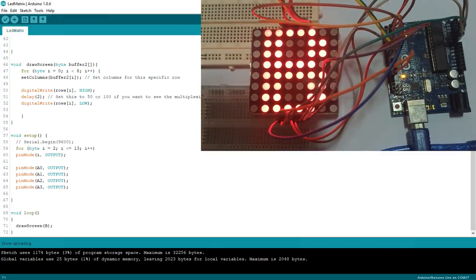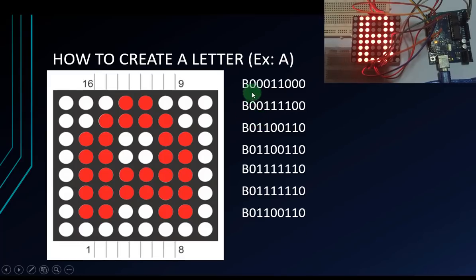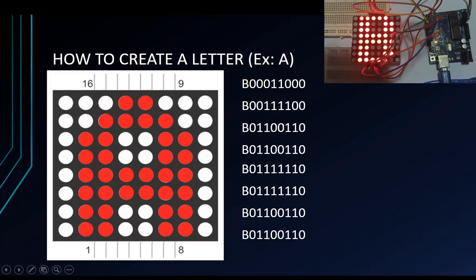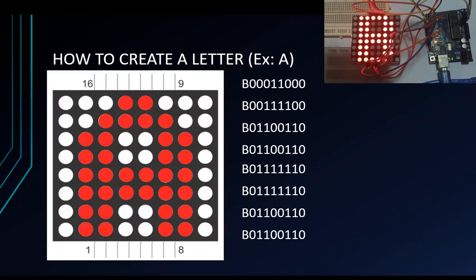You can see letter B is displayed. Let me explain how the code works. This is the first row: 0, 0, 0, 1, 1, 0, 0, 0 — which means turn off, turn off, turn off, turn on, turn on, turn off, turn off, turn off. All rows follow the same pattern, and you can create any letter you want this way.